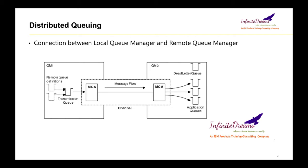What are the objects we need to create to make such a connection? From the QM1 side — the local queue manager side — we need to create a remote queue, a transmission queue, and a sending channel. On the remote queue manager side, we need to create a receiving channel and the queue to which we are going to send a message from QM1.